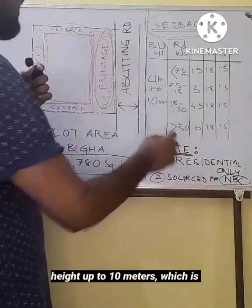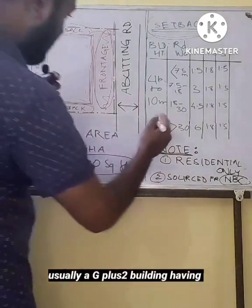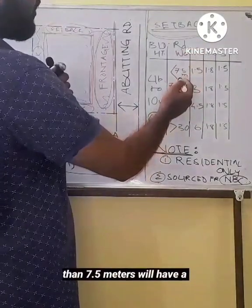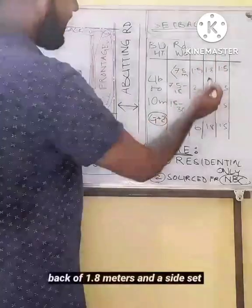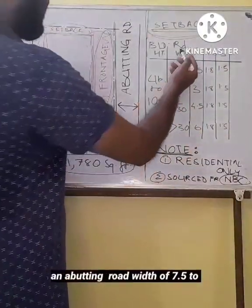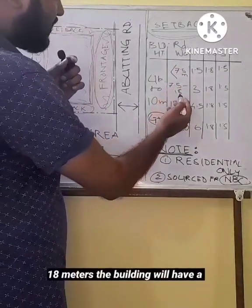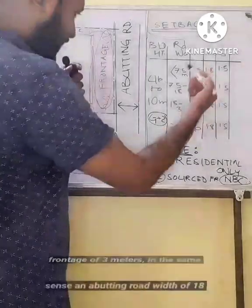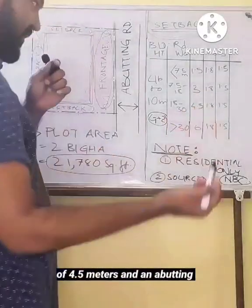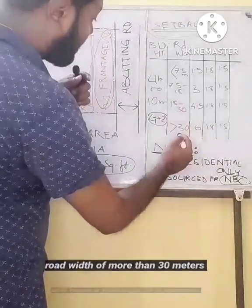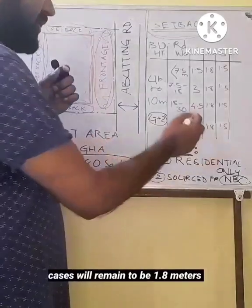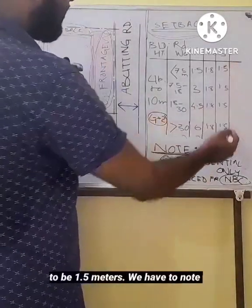Having an abutting road width of less than 7.5 meters will have a frontage of 1.5 meters, a rear setback of 1.8 meters and a side setback of 1.5 meters. Similarly, for an abutting road width of 7.5 meters, the building will have a frontage of 3 meters. An abutting road width of 18 to 30 meters will have a frontage of 4.5 meters, and more than 30 meters will have a frontage of 6 meters. The rear setback in all these cases will remain 1.8 meters and the side setbacks will remain 1.5 meters.